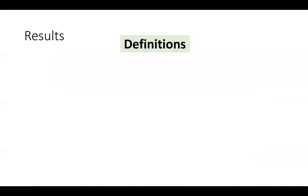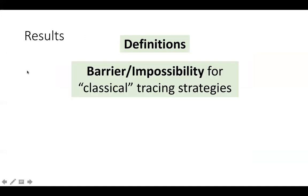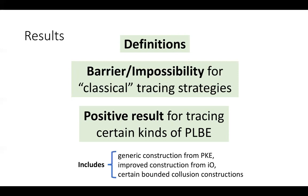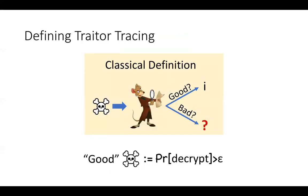Our results are the following. First, we will see that it's actually very non-trivial to even define security for traitor tracing in the setting of quantum decoders, so our first result is a compelling definition for security. Our second result is a barrier or impossibility for adapting the classical traitor tracing approaches to the quantum setting. And our final result is a positive result showing how to trace certain kinds of an object called private linear broadcast encryption, which captures some of the traitor tracing constructions from the literature.